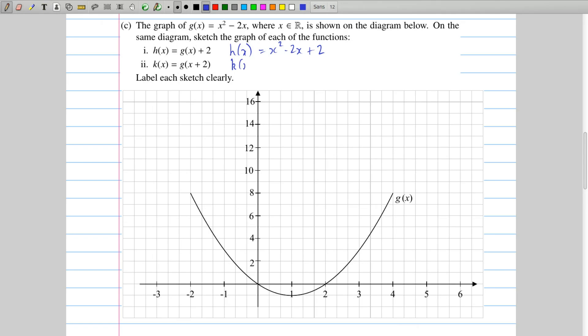We can also say that k of x, everywhere you would have an x in g of x, you replace it with an x plus 2. So instead of x squared, you've got x plus 2 squared. And instead of minus 2x, you've got minus 2 times x plus 2. And you can do all your algebra and try and work that out, and then put in a few values of x and see what happens. But that's a lot of extra work compared to what you need to do.